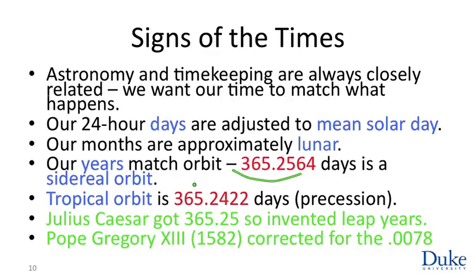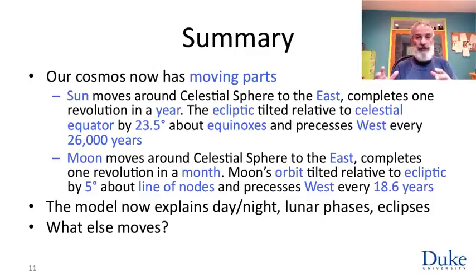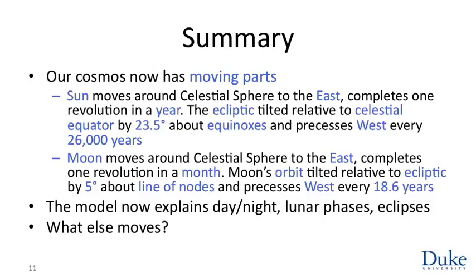We use astronomical phenomena to adjust our clocks and calendars not for any trivial reason, but because astronomical phenomena govern our lives and we need our timekeeping to match. It's quite an elaborate universe we've built: the celestial sphere with fixed stars, a solar sphere rotating about a tilted axis so the sun moves along the ecliptic, and a lunar sphere tilted relative to the ecliptic. All these tilted trajectories also wobble to the west — the celestial axis very slowly every 26,000 years, the moon's a bit faster at every 18.6 years. This explains the alternation of day and night, the phases of the moon, eclipses, and seasons.